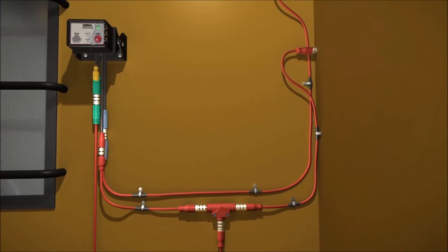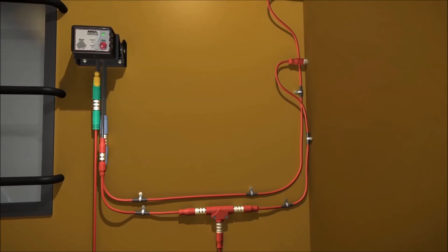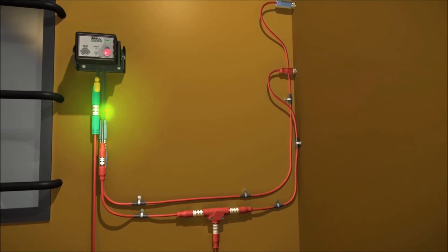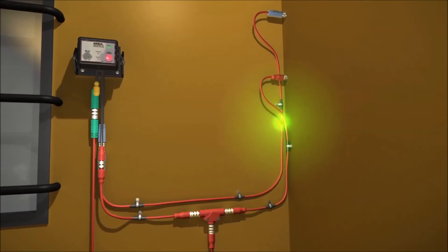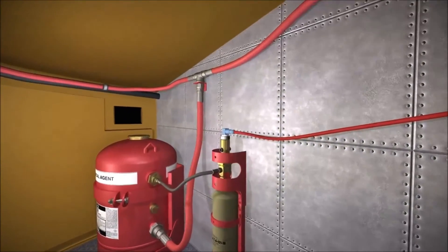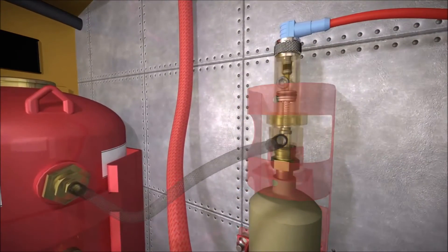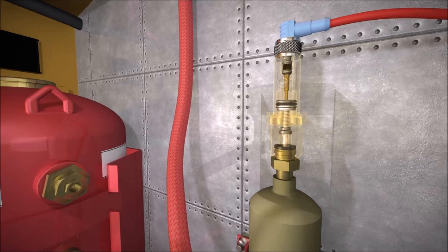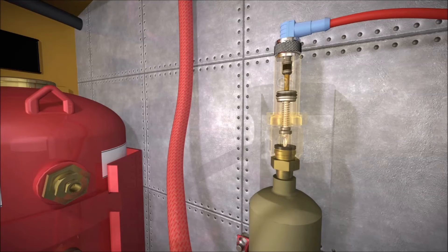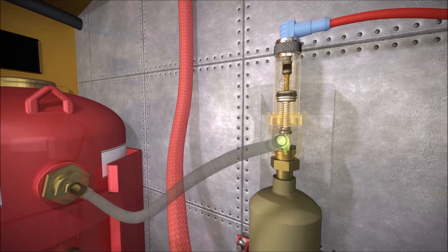After the predetermined time delay period, the CheckFire 110 sends a signal to the protracting actuation device or PAD. The PAD generates force to drive the electric pneumatic actuator puncture pin through a seal in the expellent gas cartridge, allowing the nitrogen expellent gas to flow into the agent tank.